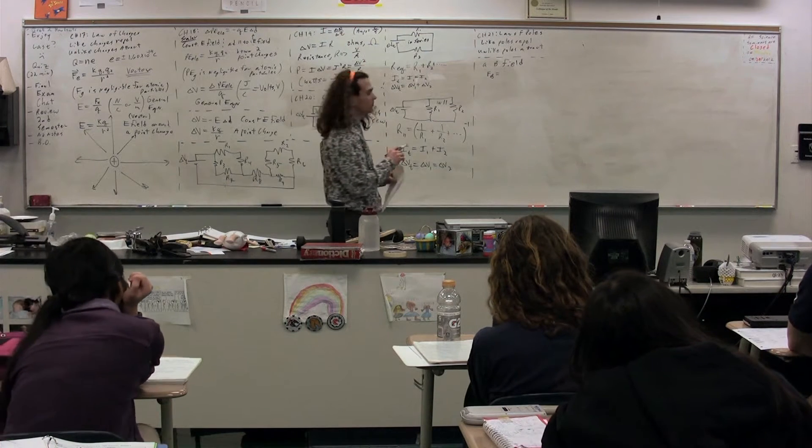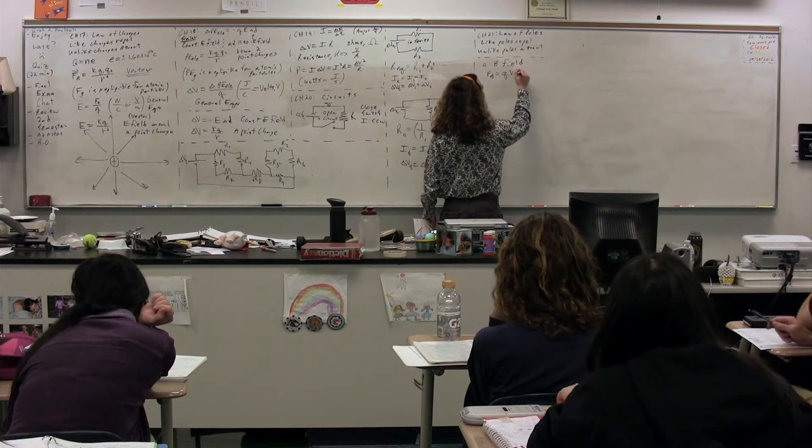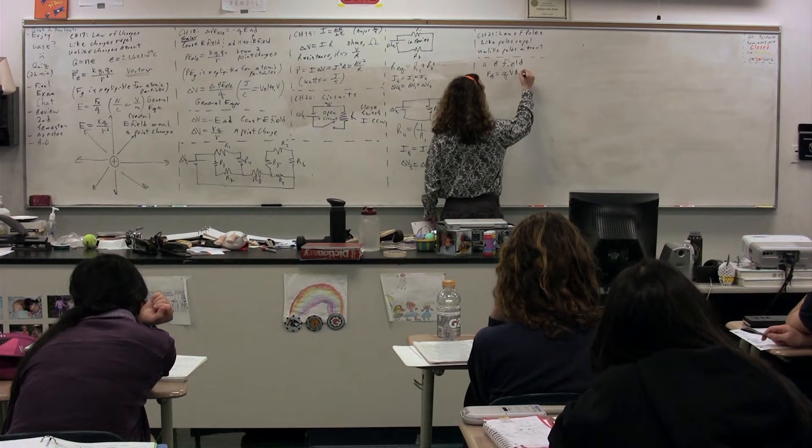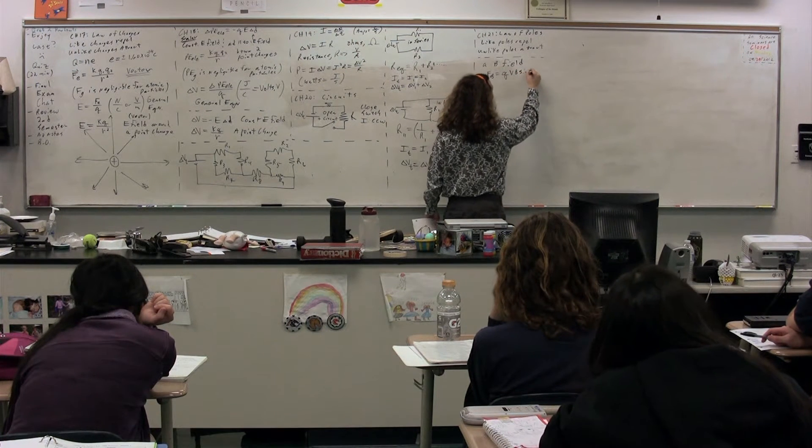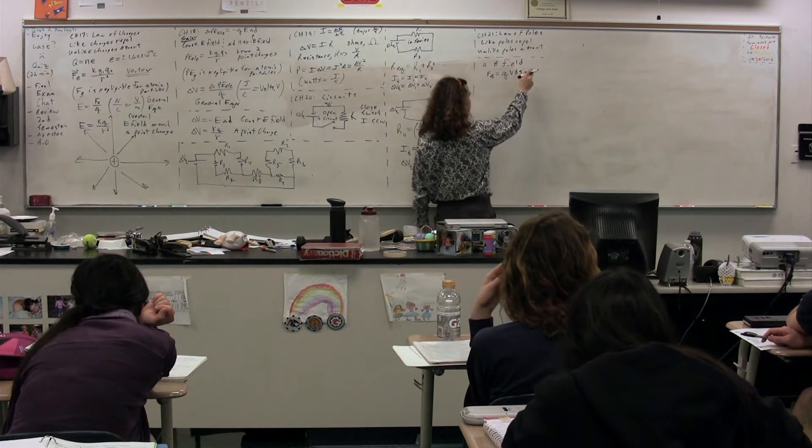So what is the equation for the magnetic force when a charge is moving through a magnetic field? The charge times the velocity times the magnetic field times the sine of theta. So we have the magnetic force equals the charge times the velocity times the magnetic field times the sine of theta.